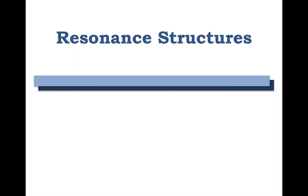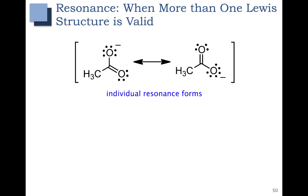In this video, we're going to go over resonance structures. Resonance occurs when more than one Lewis structure is valid. For example, if you're trying to draw a Lewis structure of this molecule here, you can see that you can have that negative charge on the top oxygen or on the bottom right oxygen. Either is correct, and in fact, neither exactly explains what's going on. The negative charge is being evenly distributed over both.